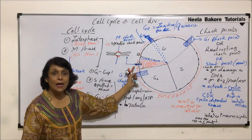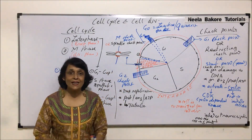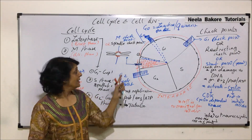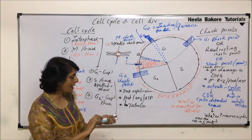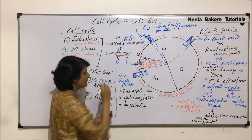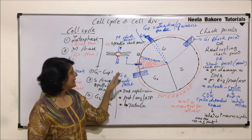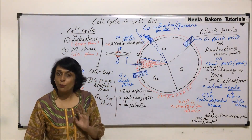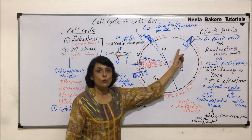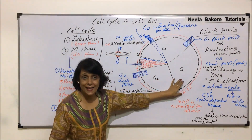Once the spindle fibers are properly attached, the cell gets into anaphase. The spindles contract, resulting in splitting of the chromosomes. These three checkpoints — at G1, G2, and M — ensure that cell division takes place in a proper manner. There is no checkpoint in S phase.